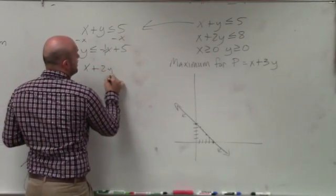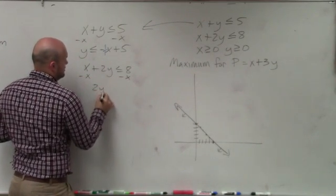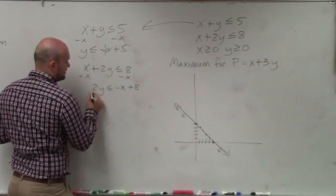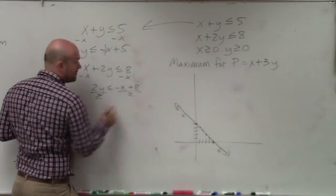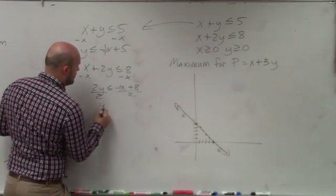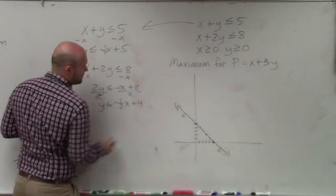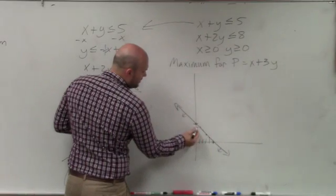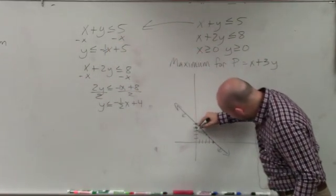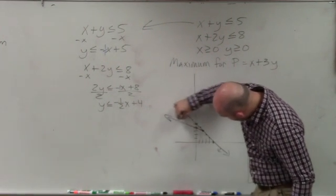Then let's do the next one: x plus 2y is less than or equal to 8. Subtract x from both sides, giving 2y is less than or equal to negative x plus 8. Divide both sides by 2 — remember the 2 goes into both terms, and remember there's a 1 in front of x — so y is less than or equal to negative one-half x plus 4. So now I'm going to go up to 4 on the y-intercept and go down 1 over 2, then connect that line.